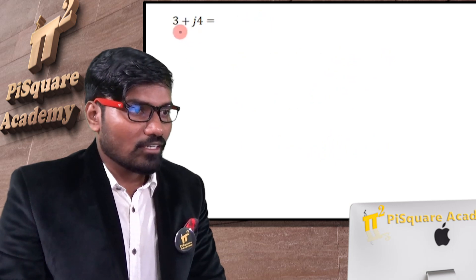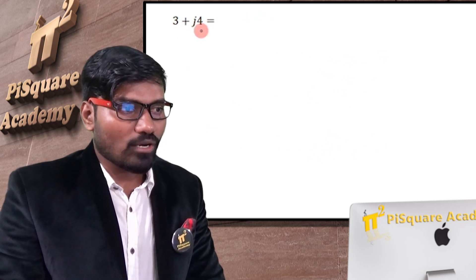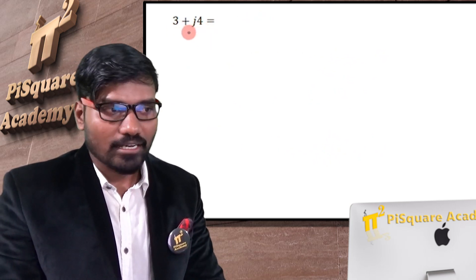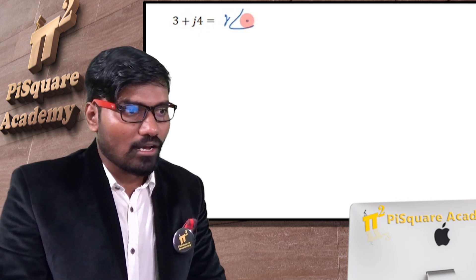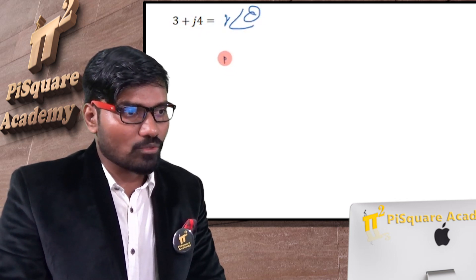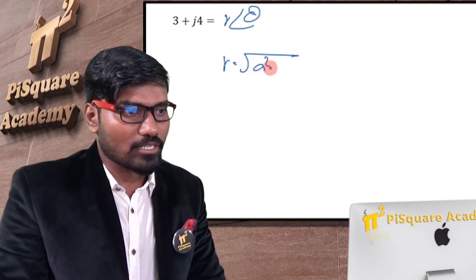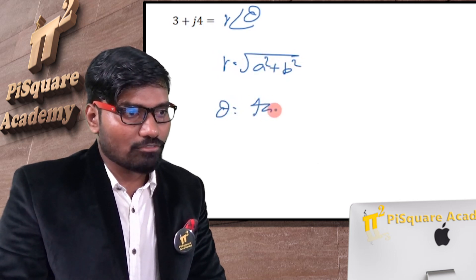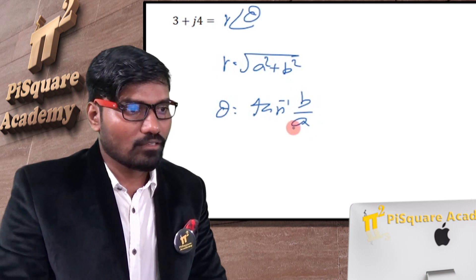Let's go for next conversion. Let's do this. 3 plus j4, I want to convert it to, which form is this? Rectangular form. I want to convert it to r at an angle theta form. R is the magnitude, r value is equal to square root of a square plus b square, and theta is equal to tan inverse of b by a.